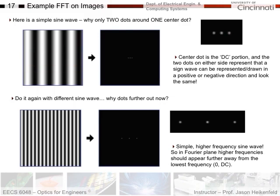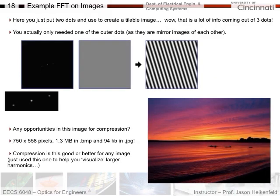Let's do it again with a higher-frequency sine wave. Look what happened — the dots got pushed further out. The higher the frequency of the object, the further out the Fourier transform representation will be, because as you go further away from the center you get higher frequencies. So when you're doing your experiments this week in the lab and you do Fourier filtering, the further you are from the center in the Fourier plane represents a higher frequency — a sharper transition or higher repetition in the object.